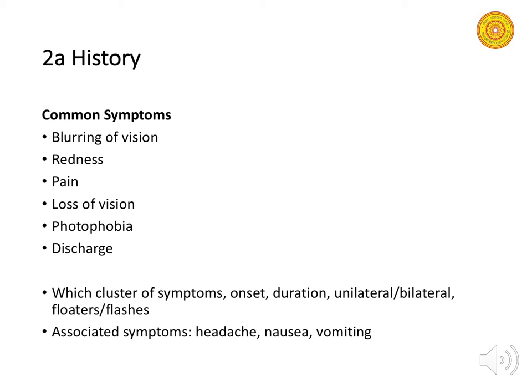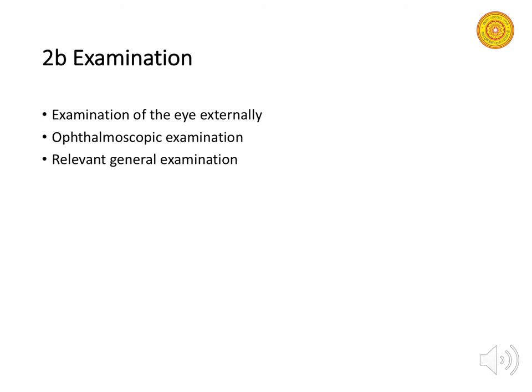Unilateral eye problems differ from bilateral ones — unilateral redness means something different from bilateral redness. Floaters are black scotomas or flashy objects in the visual field, indicating some problem in the eye. Associated symptoms like headache, nausea, and vomiting point toward more sinister diagnoses.